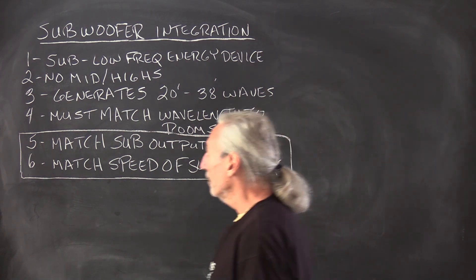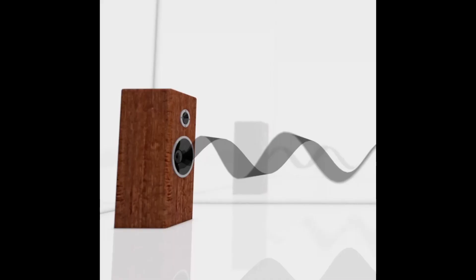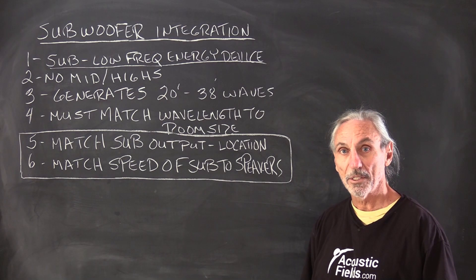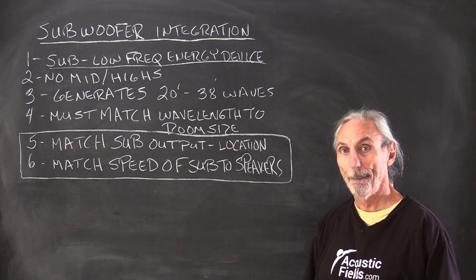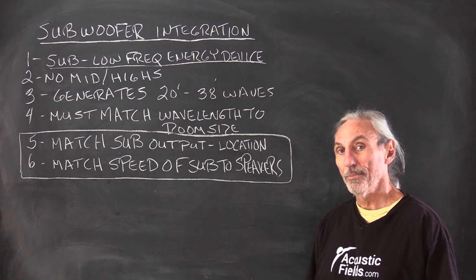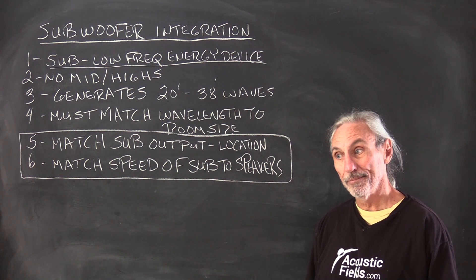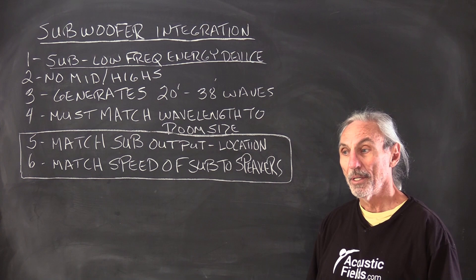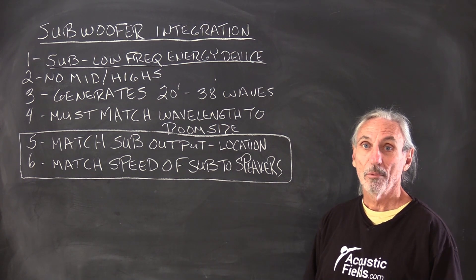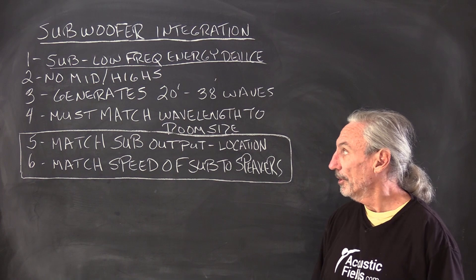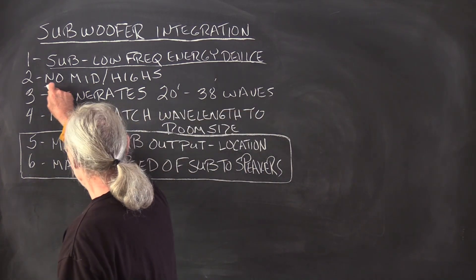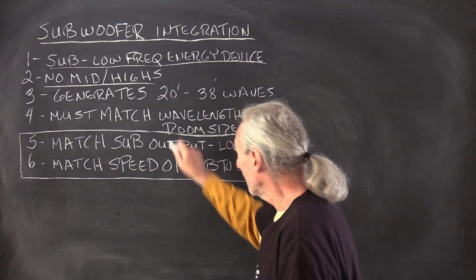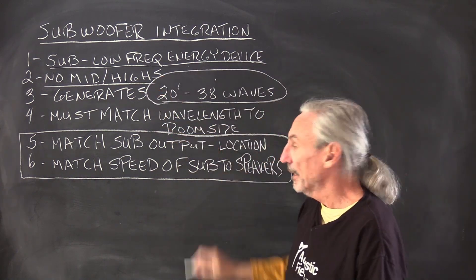So what we have to do is get back to basics. We have to realize that a sub is a low frequency producing device. I had a client the other day tell me that he could not understand why he could not hear 6,000 cycles out of his sub. Well, a sub does not produce that energy. It stops usually at 100, 120 cycles. So that is an extreme example of the awareness level out there. You have to realize there is no mids or highs that come out of a sub. It is just low frequency energy.